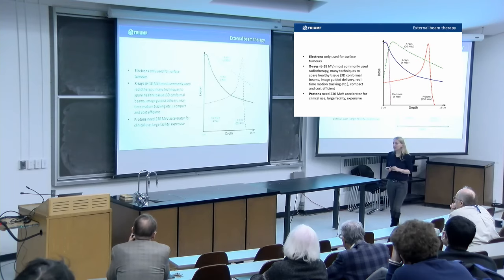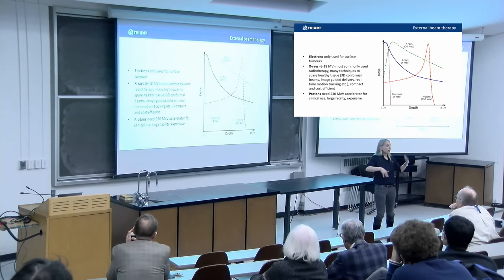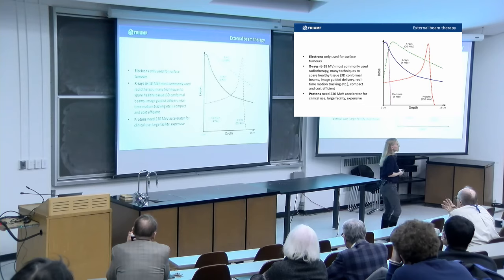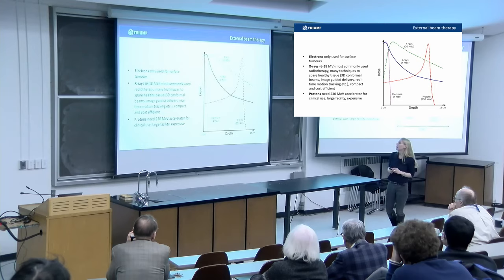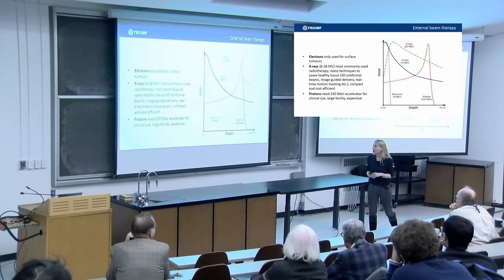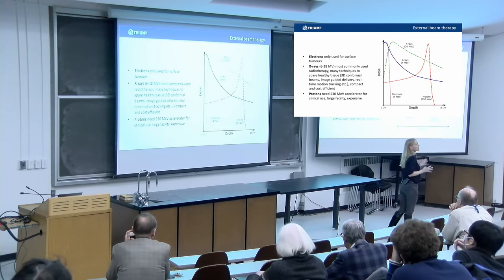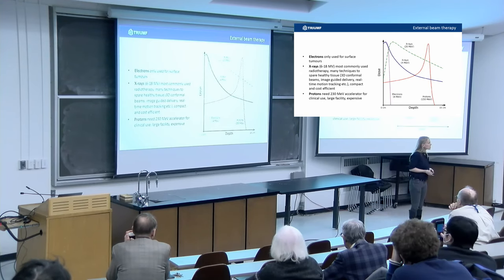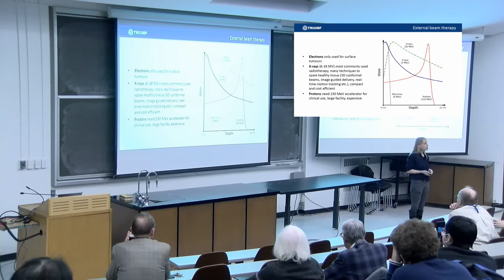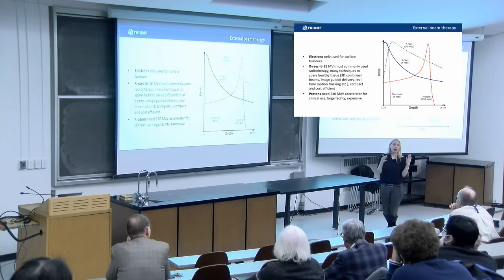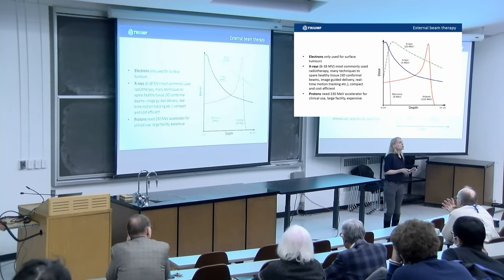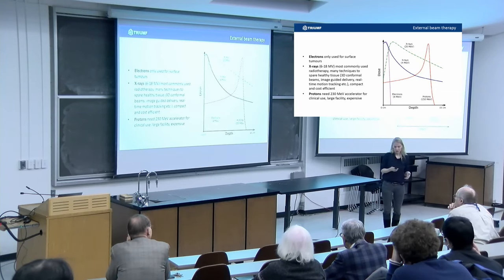X-rays are the most common. They are very popular. They are very well known. You have all these different techniques to protect healthy tissue. Protons, to do this effectively for all different sizes of patients, you need 230 MeV. That's quite a sizable accelerator. Keep in mind, ours is 500. These accelerator complexes are expensive. They used to be $200 million. They came down quite a bit right now in the order of $50 million. But if you have a healthcare system that is cash-strapped, you want to spend your money wisely, of course.